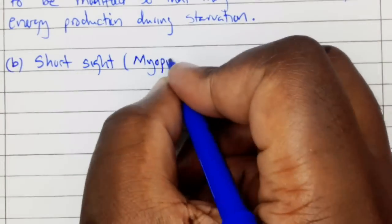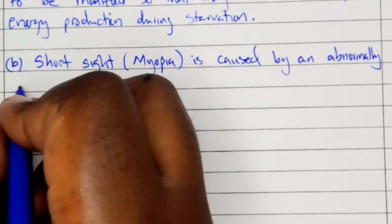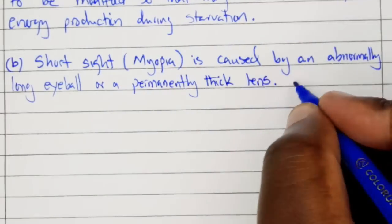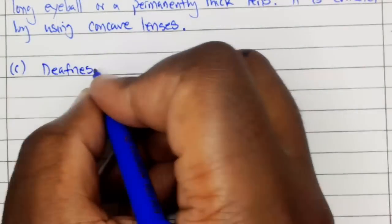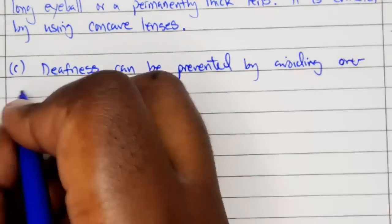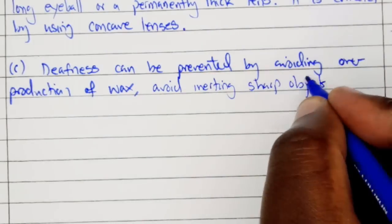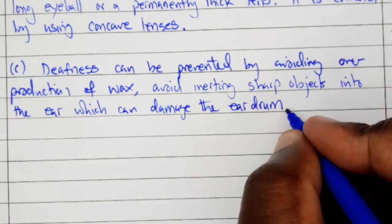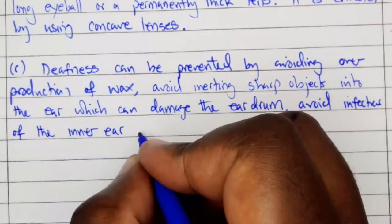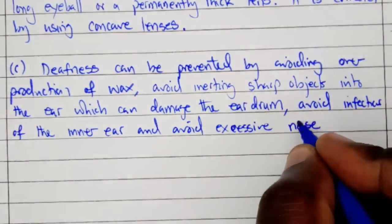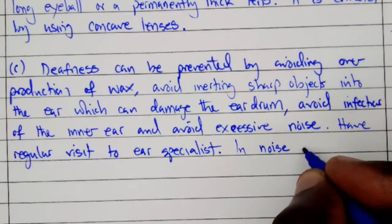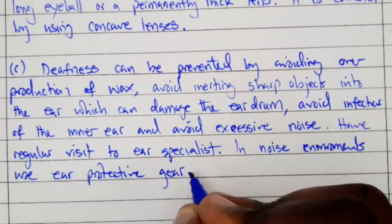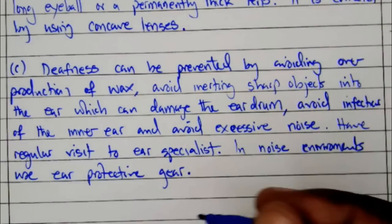Part B: Short-sight or myopia is caused by abnormally long eyeball or permanently thick lenses. It is corrected by using a concave lens. Part C: Deafness is prevented by avoiding overproduction of wax, avoiding inserting sharp objects into the ear which may damage the eardrum, avoid infections of the inner ear, and avoid excess noise. Also have regular visits to an ear specialist. In noisy environments, use ear protective gear. These were the answers to question number 9.